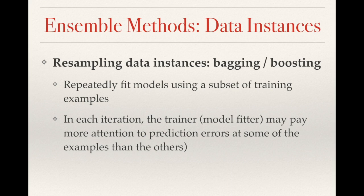Ensemble algorithms refers to a framework of constructing algorithms as opposed to some specific algorithm, so there are quite a large number of different choices. For example, we can construct the weak classifiers with respect to different subsets of the training samples. This family of algorithms is called bagging.